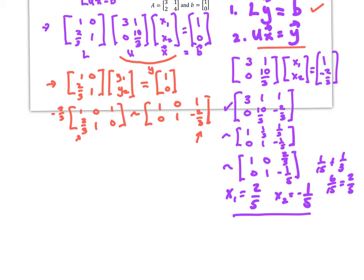Here's what I did: divide each row by its leading term — divided row one by 3, divided row two by ten-thirds. Right away I know x2 = -1/5. Then multiply by -1/3 and add to get x1 = 2/5. Now let's move on to a 3x3 — try it yourself first.